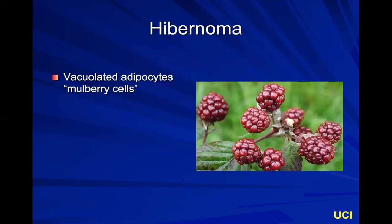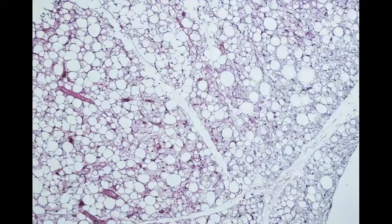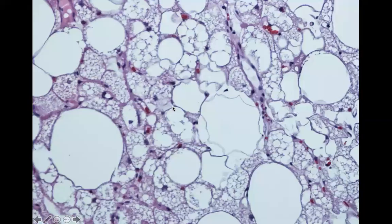A hibernoma is the fatty collection seen in brown fat. It's known for its mulberry cells. Looking at the image, it doesn't look as clean as a lipoma because the adipocytes not only vary in size and shape, but they have all these little vacuoles inside — these are the mulberry cells of a hibernoma. Nothing else looks like this.